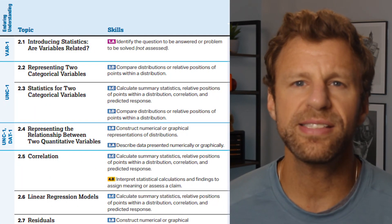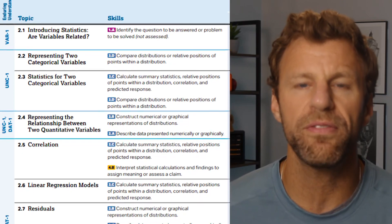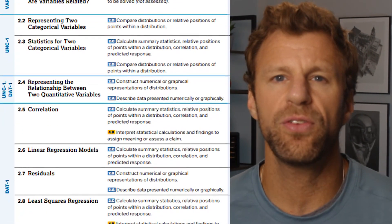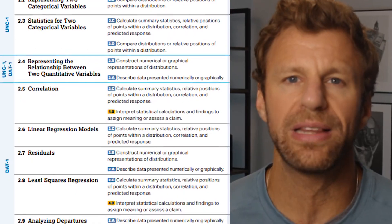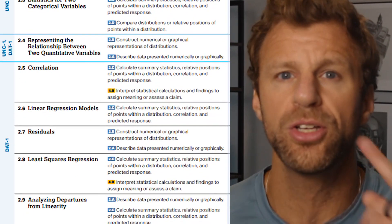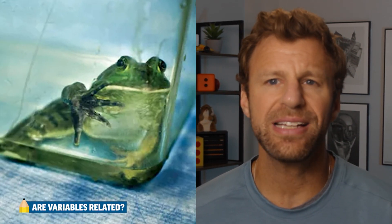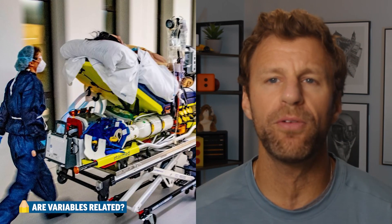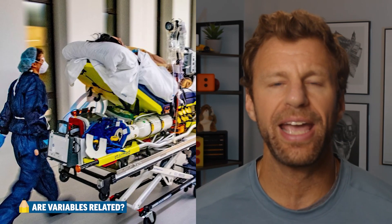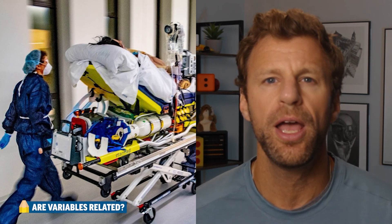Unit 2 covers exploring two-variable data — that's taking one set of data and collecting two variables from it. We then analyze those two variables and how they possibly are related to each other. Maybe that's one sample of frogs where their lengths and weights were measured, or one sample of hospital patients where their ages and length of hospital stay were recorded, or one sample of kids where we track their age and TV watching habits.